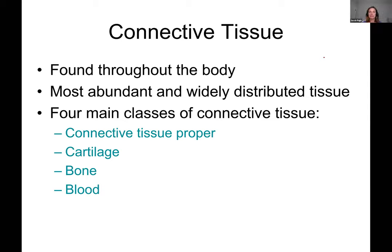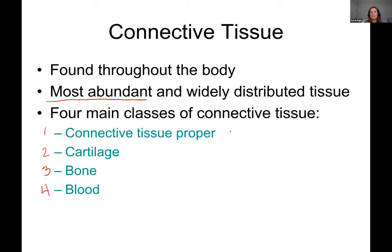The last thing we're going to talk about today is connective tissue. We find it basically throughout the entire body — it is the most abundant and widely distributed tissue. There are four main classes: connective tissue proper, which includes tendons and ligaments; cartilage; bone; and blood.